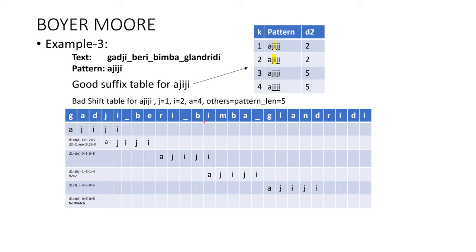I is matched with I, then J mismatches with B. Calculate both D1 and D2. D1 = shift value of B (5) minus 1 matched = 4. D2 = 2 since only I matched. Maximum of 4 and 2 is 4. Shift pattern 4 times right. Next, I with underscore — immediate mismatch. D1 = shift value of underscore (5) minus 0 = 5. Shift 5 times. Next, I with D — immediate mismatch. Shift value of D is 5, so 5 minus 0 = 5. If shifted 5 times it goes outside the bound, and since there is no match, the Boyer-Moore algorithm prints no match.